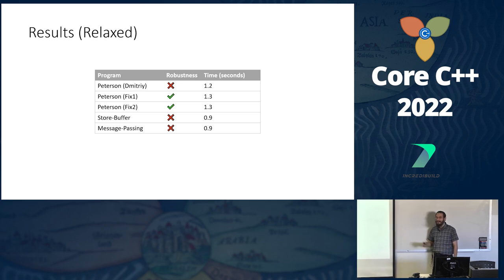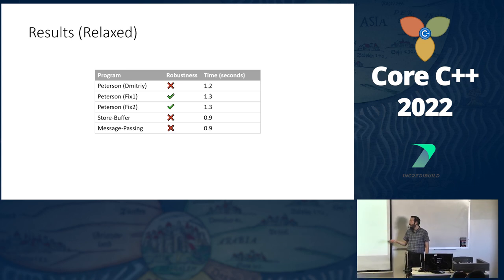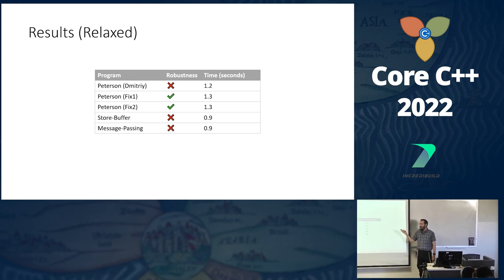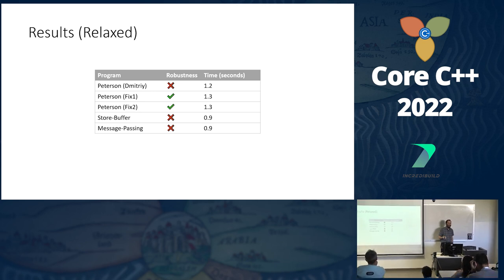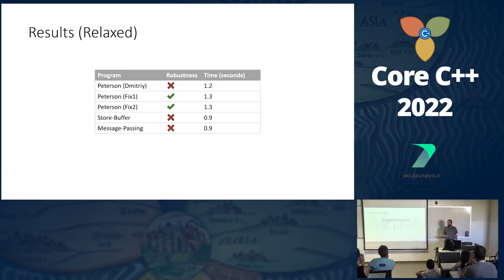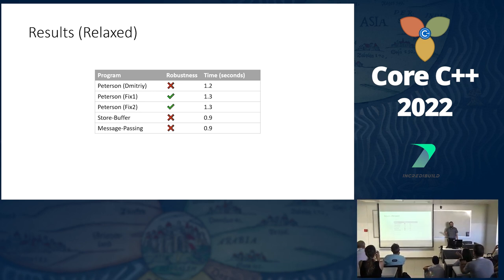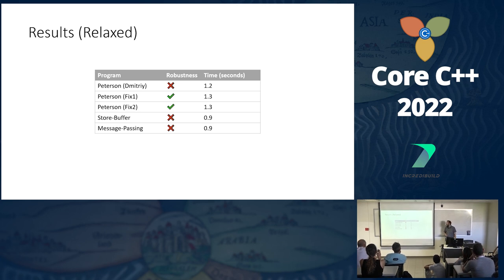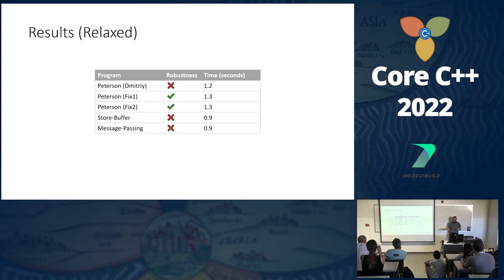Then we went further and analyzed the relaxed semantics, where we found that Dmitry's implementation was actually not robust — and therefore incorrect. We also proposed two possible fixes to restore correctness of Peterson's algorithm.